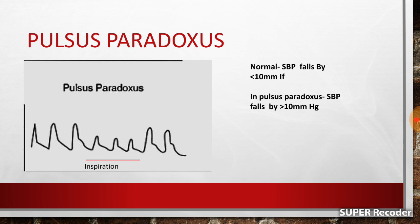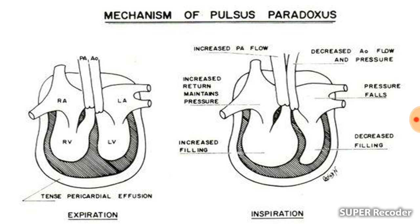In a normal person, systolic blood pressure falls by less than 10 mmHg during inspiration. But if this fall in systolic blood pressure is greater than 10 mmHg, you get a still lower volume pulse during inspiration compared to expiration — this is called pulsus paradoxus. It is mainly seen in constrictive pericarditis, cardiac tamponade, or hyperinflation diseases of the lung such as asthma and COPD.